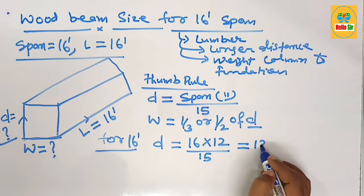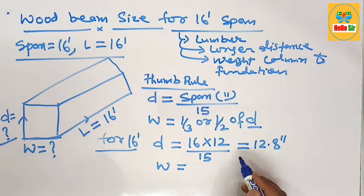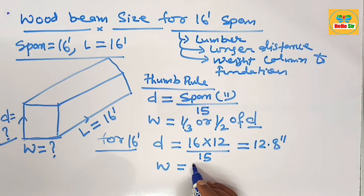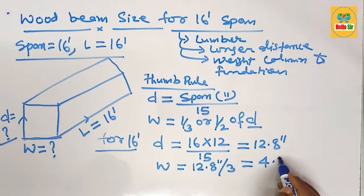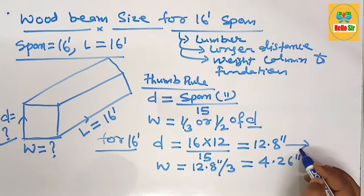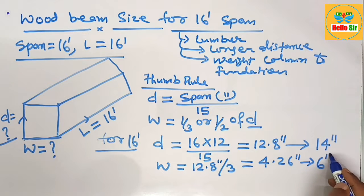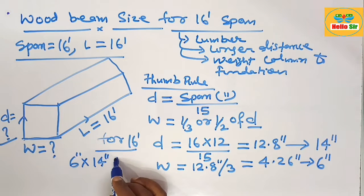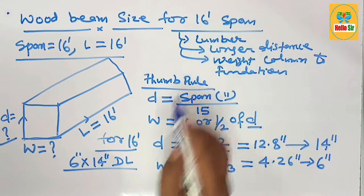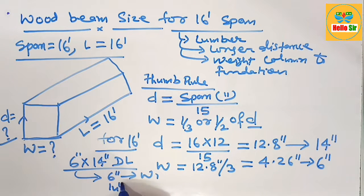The width of the beam equals the depth section divided by three, which is 12.8 inches divided by 3, coming to about 4.26 inches. So you require a 14-inch depth section and a 6-inch width section. Therefore you need a 6 by 14 inch dimensional lumber as the wood beam to span 16 feet, where 6 inches is the width and 14 inches is the depth.